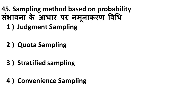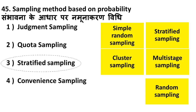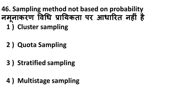Next question: which sampling method is based on probability? There are five probability-based sampling methods: simple random sampling, stratified sampling, cluster sampling, multi-stage sampling, and random sampling. In this question, stratified sampling is based on probability. Remember these five types as probability-based sampling methods.